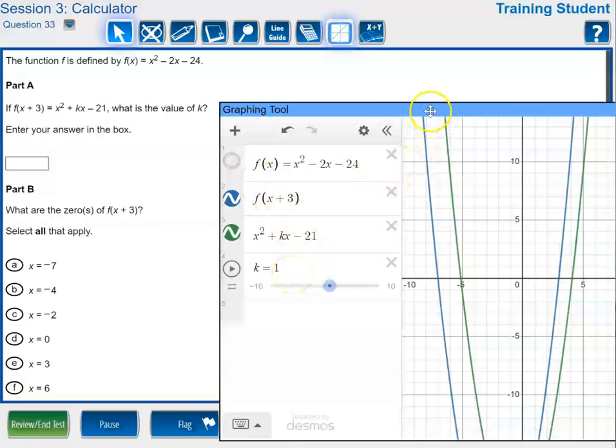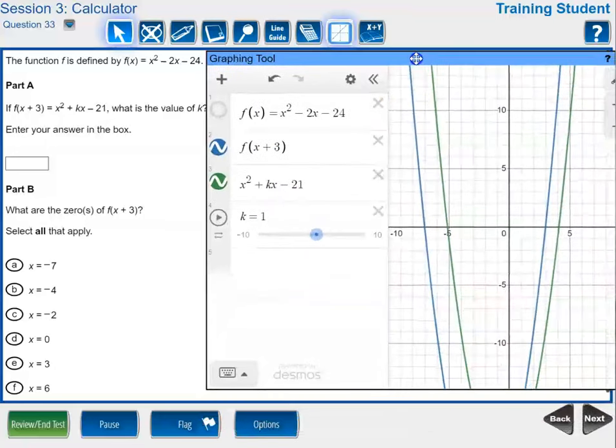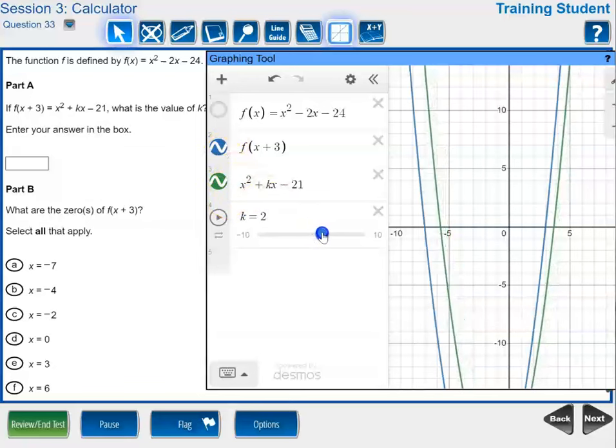So I'm looking for the value of k that will make this green one line up with this blue one. So just like before we're going to move this over until it's right on top and right at the 4 is where that happens. So the correct answer for this part will be 4. k has to be 4.